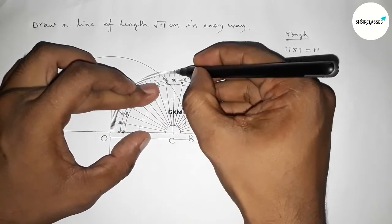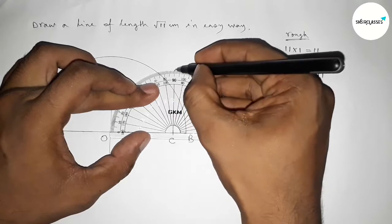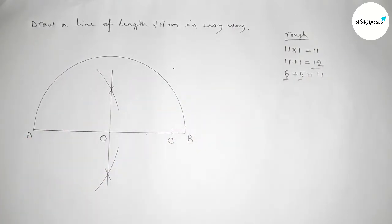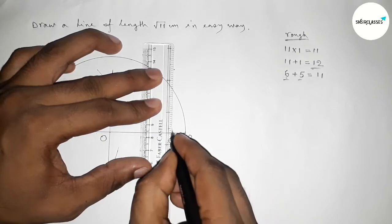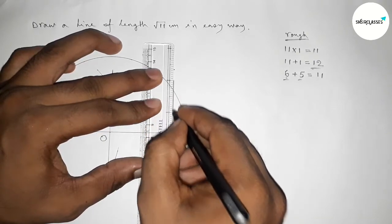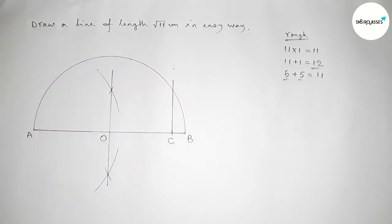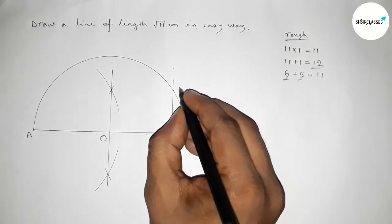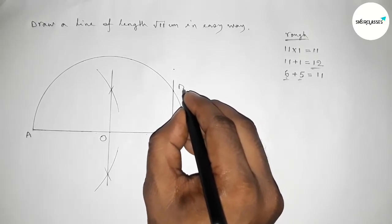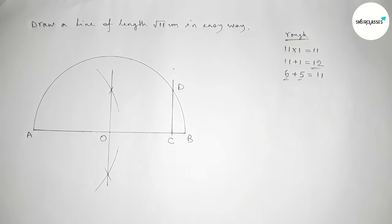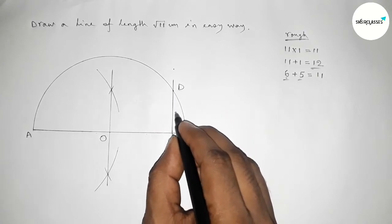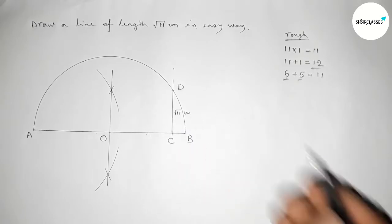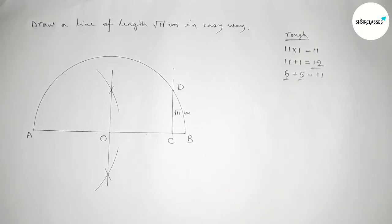Next we have to draw a 90 degree angle at point C using a protractor. This is 90 degrees. Joining this line, which meets the semicircle at a point, taking that as point D.